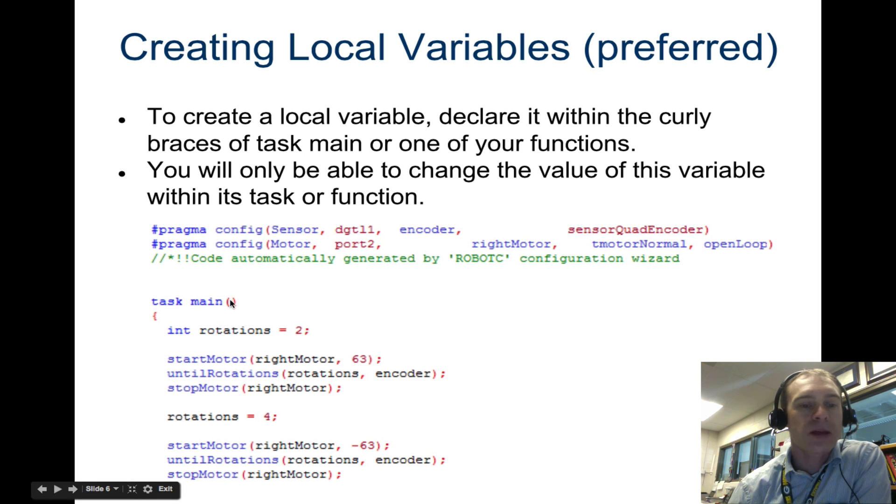So right now we have task main, and inside that we've declared a variable. We called it rotations. You could call it pig or french fry or whatever you want to call it, but we say rotations because it would make sense with what we're doing. We say it equals zero.